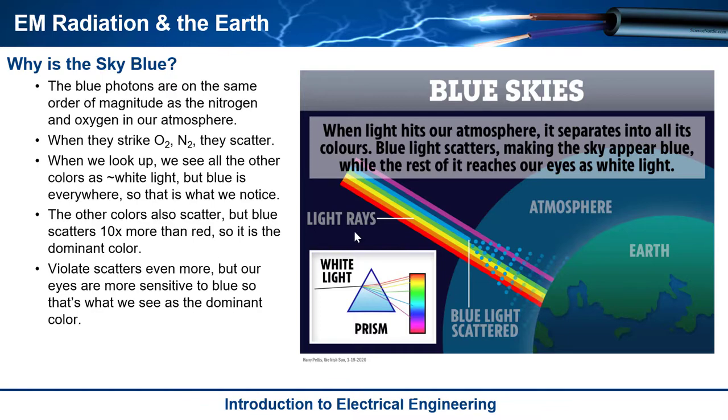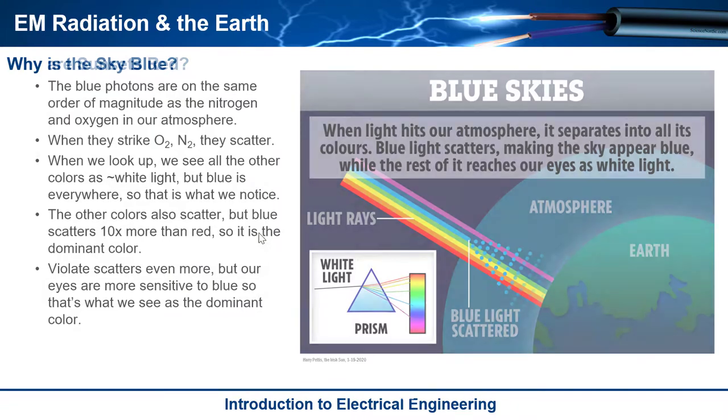So that's why the sky is blue. The sky is not blue because it reflects off of the ocean. That is not, that's a myth. It is simply because the blue photons are scattering off of oxygen and nitrogen in our atmosphere.